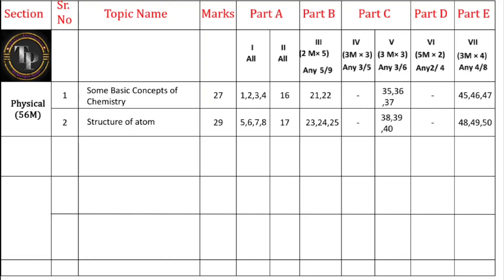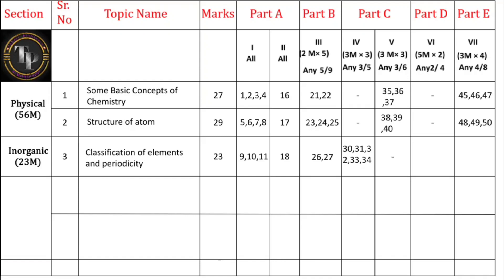Questions 38, 39, and 40 are three-mark theory questions from Structure of Atom. Questions 48, 49, and 50 are the numerical problems from Structure of Atom in Part E. For inorganic chemistry, there is only one chapter: Classification of Elements and Periodicity in Properties, which carries 23 marks. You get three MCQs, one fill in the blank, two two-mark questions, and five three-mark inorganic questions (numbers 30–34), of which you answer any three.